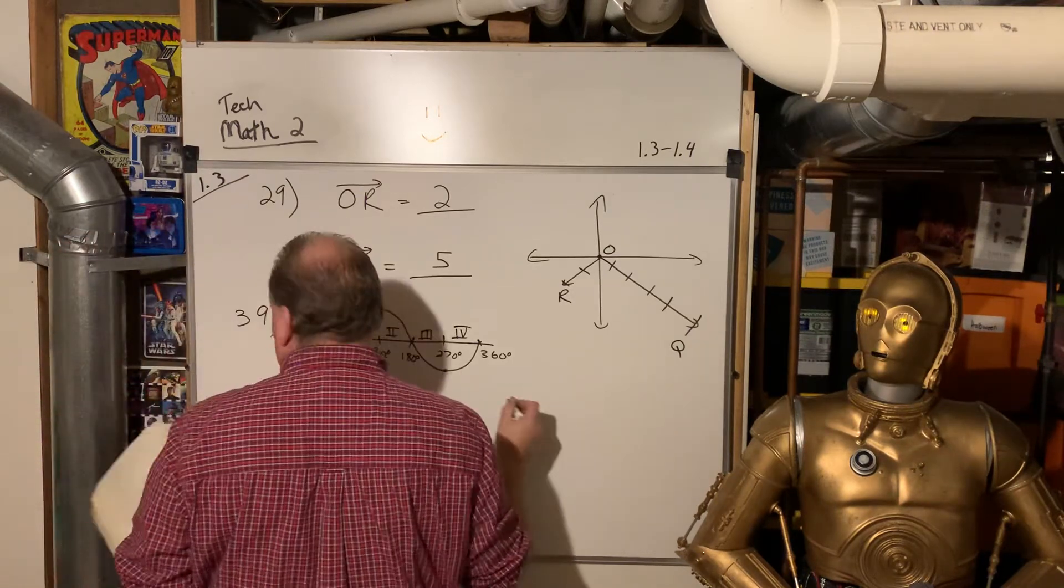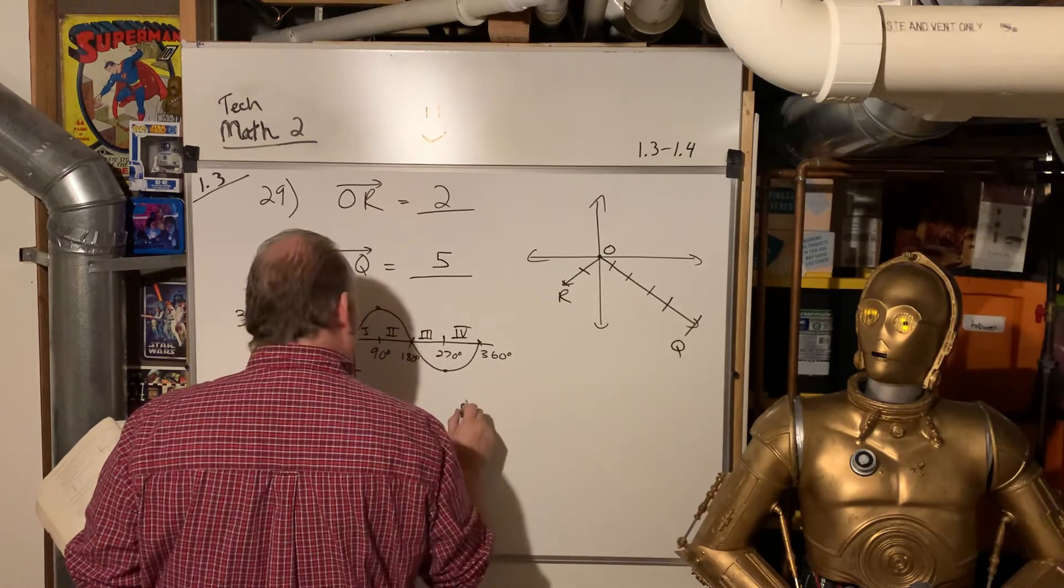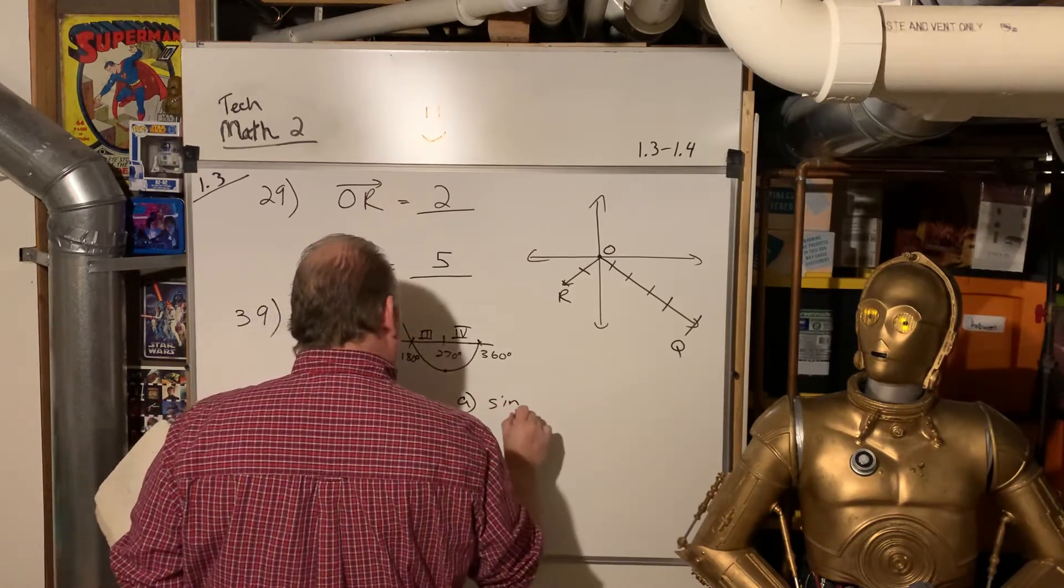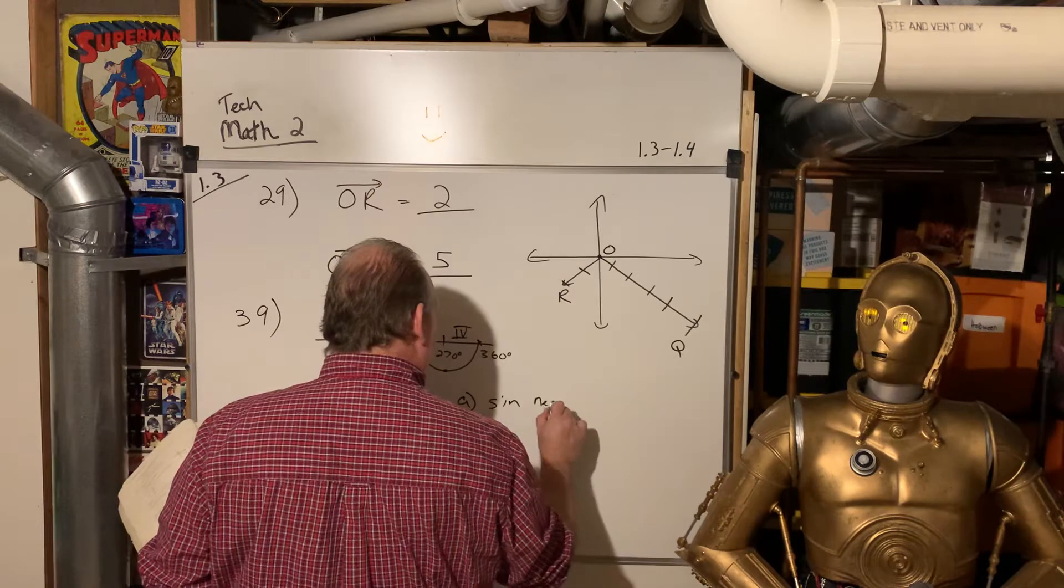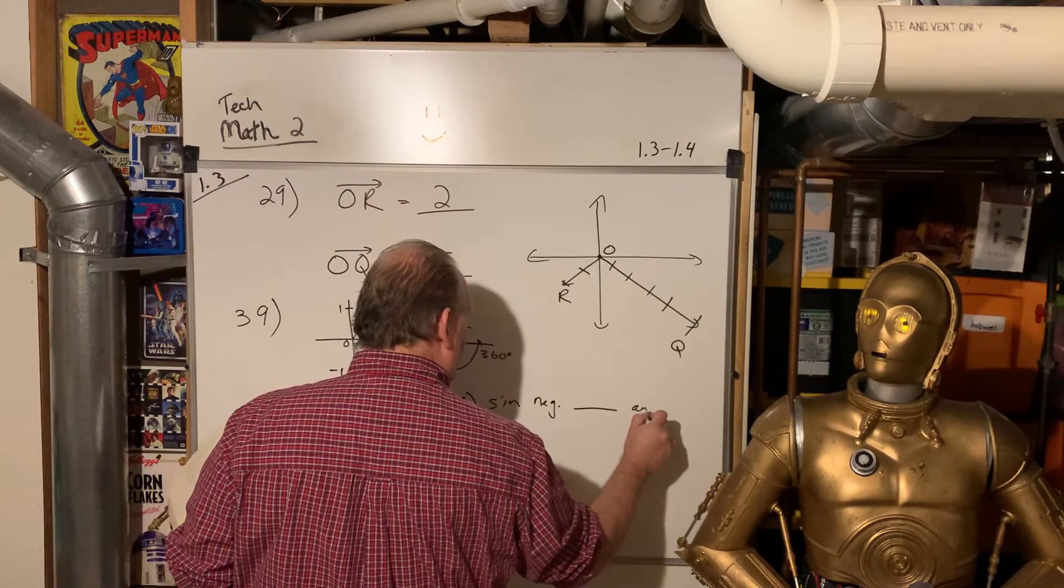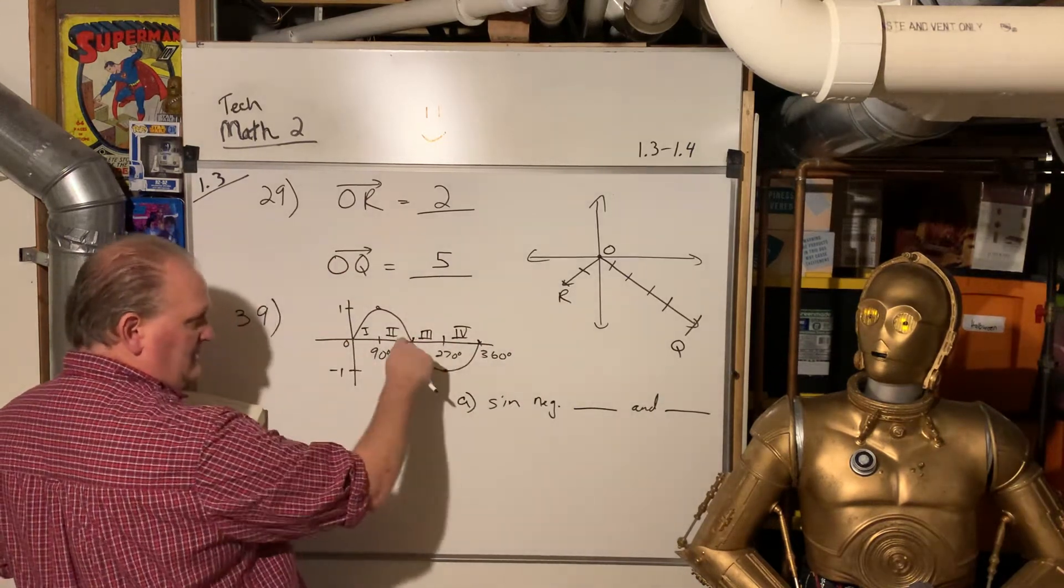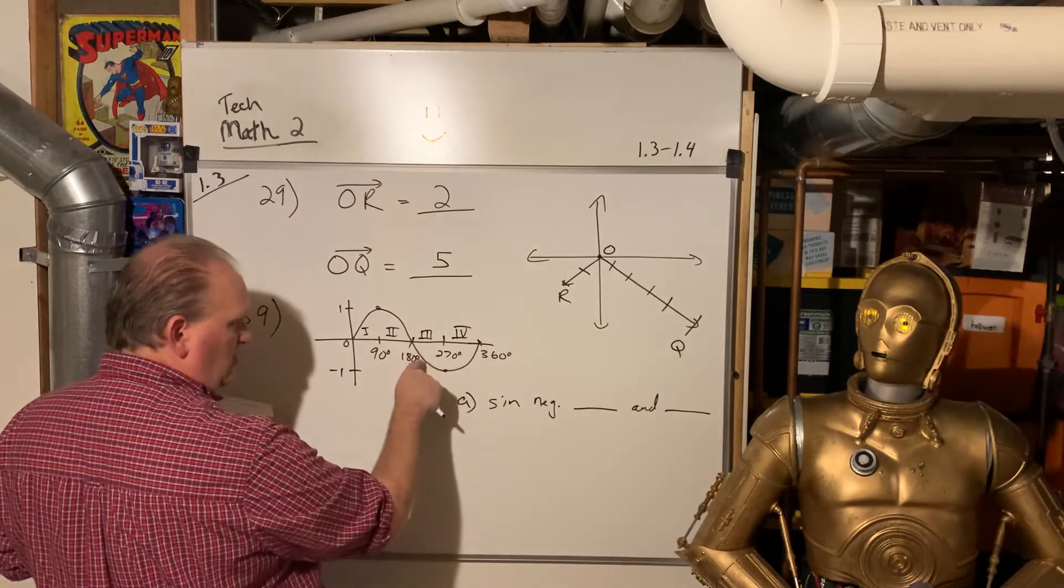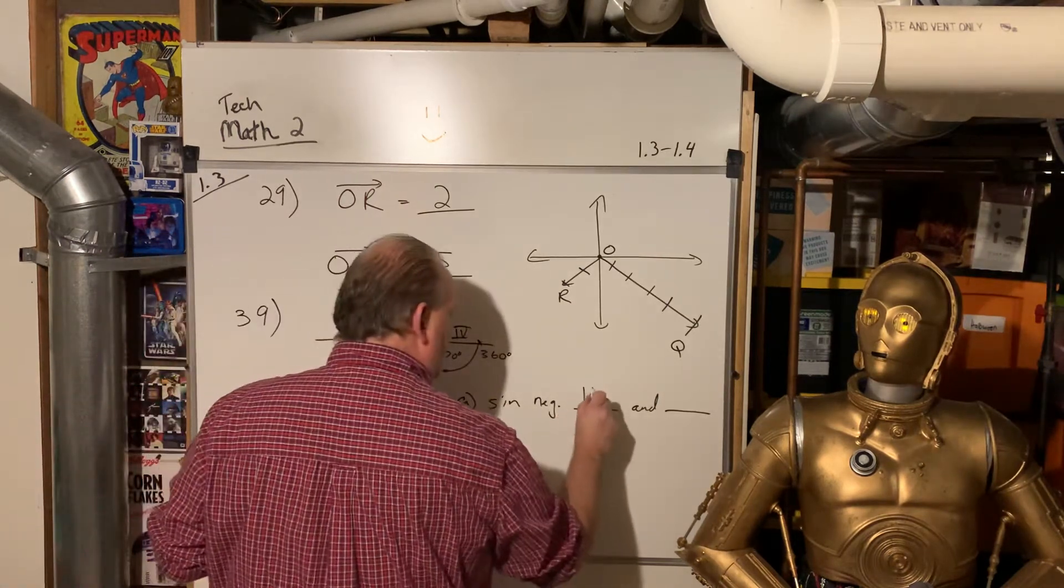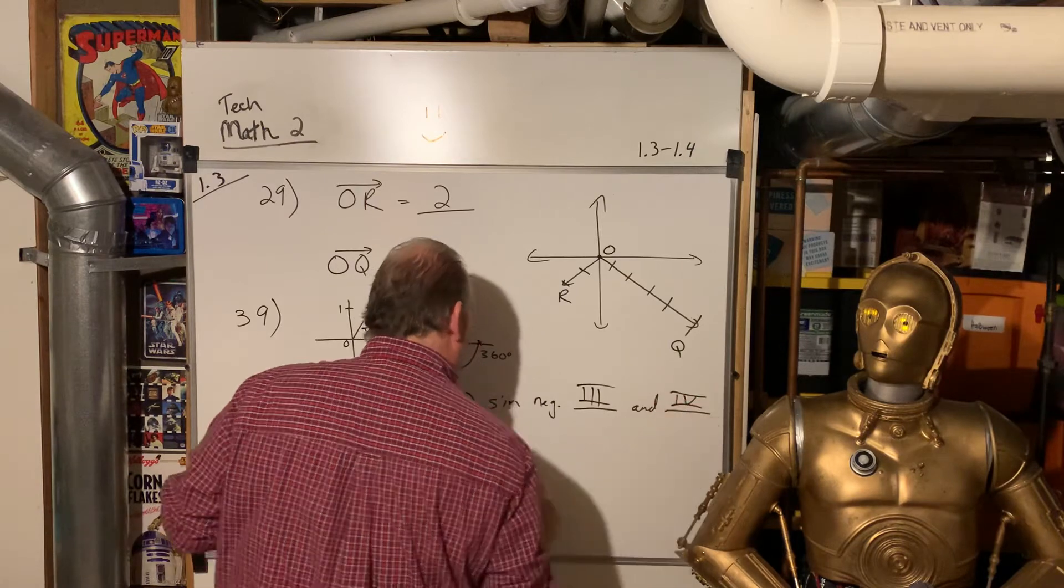So where is the sine positive? And where is the sine negative? Letter A says sine is negative. In what quadrants? Well, it's negative in... That's where it's below the x-axis. So it's negative in quadrants 3 and 4.